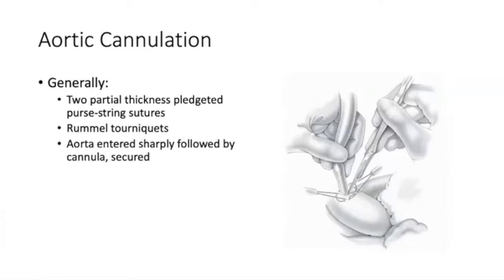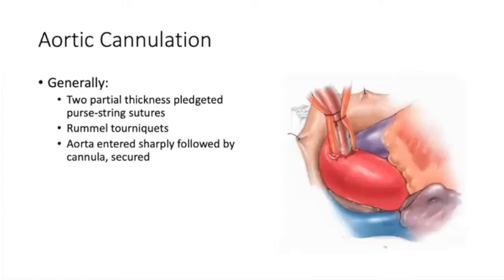The aorta is cannulated by placing two partial-thickness purse-string bites and securing those with Rummel tourniquets. The aorta is then entered sharply, sometimes with an adventitial flap and the operator's finger to control things, after which the cannula is inserted, snared, and secured.